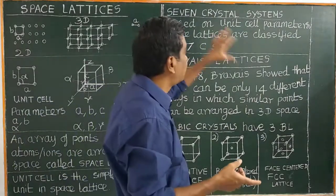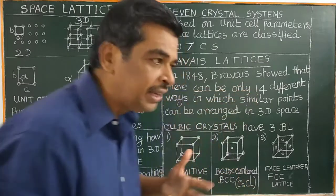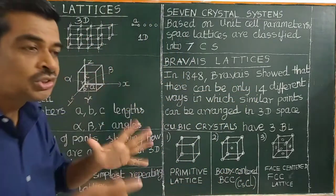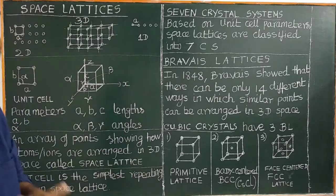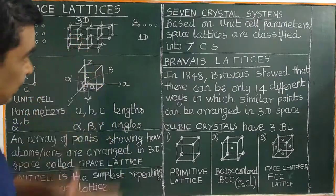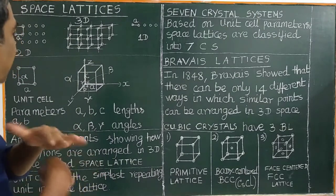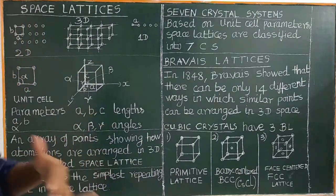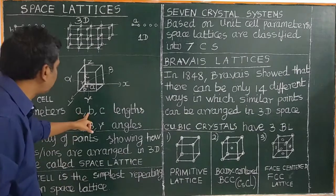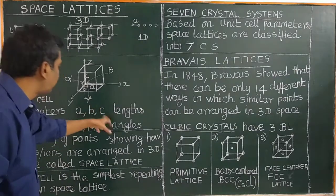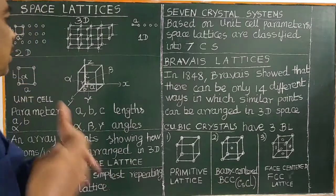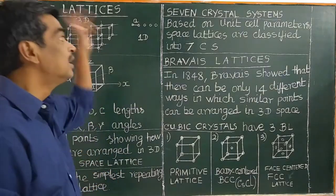Triclinic is the least symmetric crystal system, having no plane of symmetry or axis of symmetry. In triclinic, a is not equal to b, which is not equal to c, and alpha is not equal to beta, which is not equal to gamma.